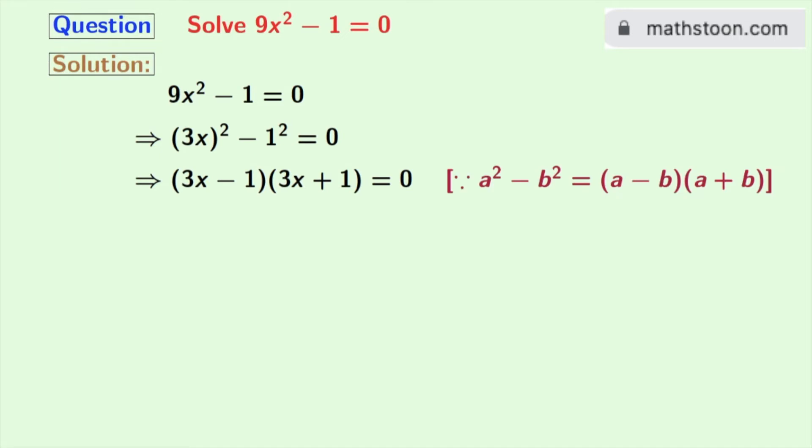So applying this formula in the left hand side, we get (3x)² - 1² = (3x - 1)(3x + 1), and in the right hand side we are left with 0.